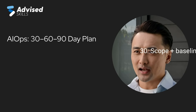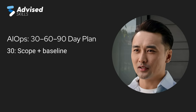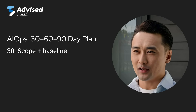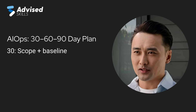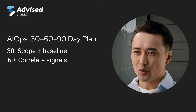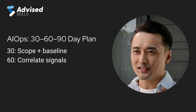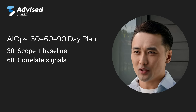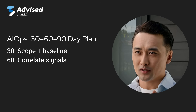In the first 30 days, pick one or two services to find a minimum schema and deliver noise reduction and routing wins. By day 60, add correlation, connect CI/CD change events, and enrich incidents with ownership and runbooks.